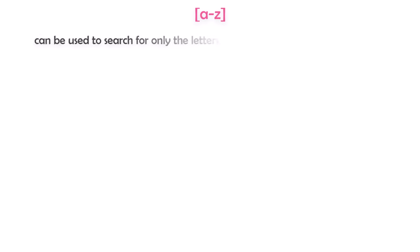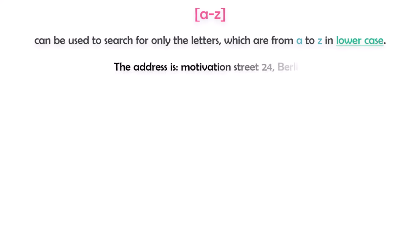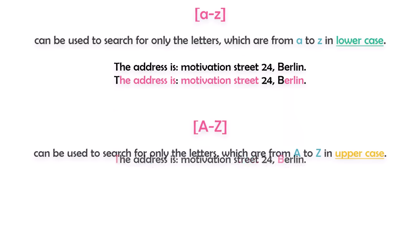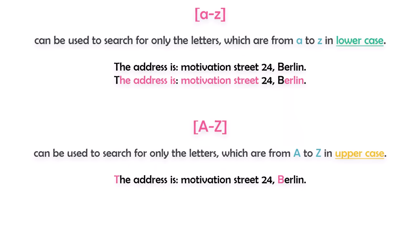The next pattern can be used to search for only the letters from A to Z in lowercase, written as [a-z]. For example, given text that contains letters, numbers, and other characters like points and commas, using this pattern I will get only the lowercase letters. All uppercase letters, numbers, or anything else will not be in the result. The pattern [A-Z] is to search for letters in uppercase only.